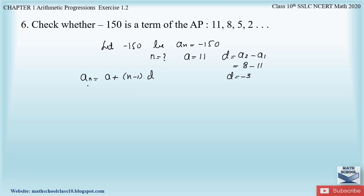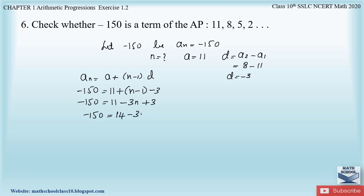Let us substitute the values to find n. aₙ = -150, a = 11, d = -3. So: -150 = 11 + (n - 1) × (-3). Opening the brackets: -150 = 11 - 3n + 3, which gives -150 = 14 - 3n. Transferring 14 to the left hand side: -150 - 14 = -3n.